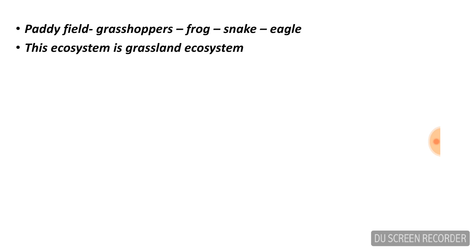Let's start. The first question is to rearrange the ecosystem. Given that, we will rearrange the ecosystem. The ecosystem is: Paddy Field — they feed grasshoppers, frogs, snakes, and eagle. This ecosystem is called Grassland Ecosystem.